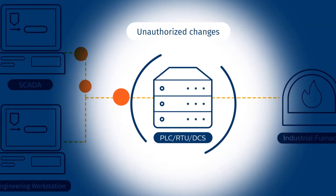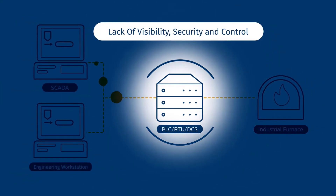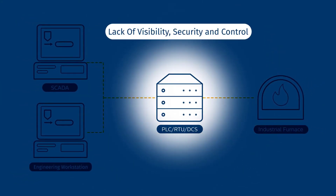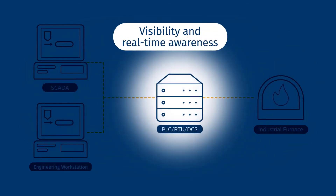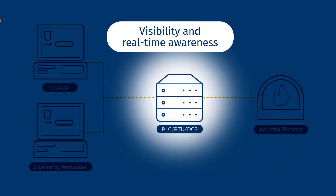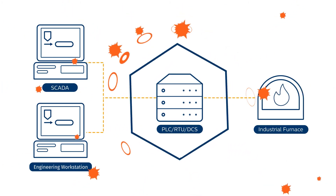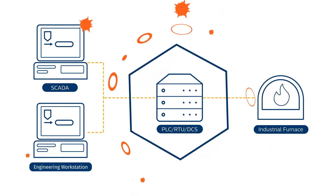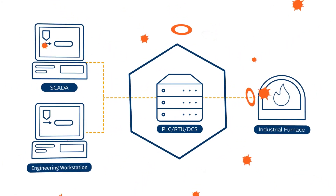Protecting the controllers against unauthorized changes is key for ensuring operational safety and continuity, yet the lack of visibility, security, and control can make it a difficult challenge. How will you be able to see the entire network, detect changes, efficiently manage vulnerabilities, and mitigate threats? By providing visibility, security, and control, Tenable.OT ensures that no unauthorized changes to industrial controllers or security threats will disrupt your OT environment.